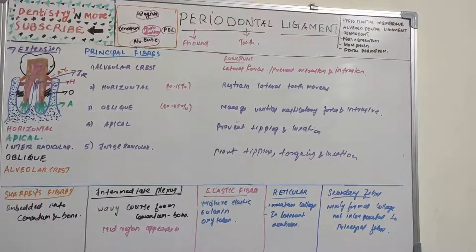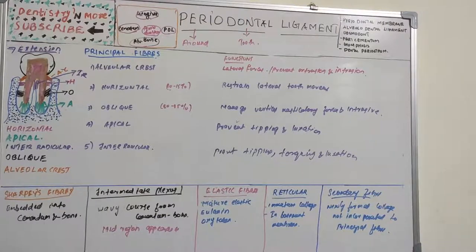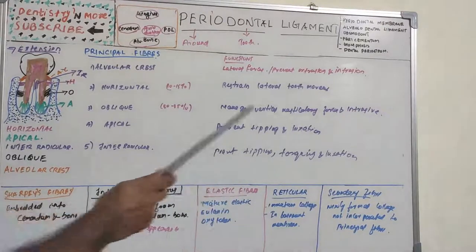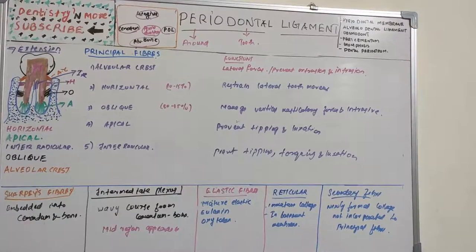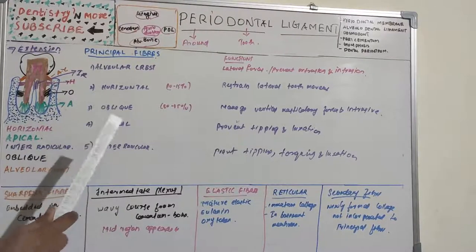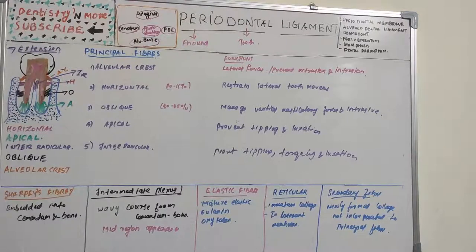The apical group prevents tooth tipping and resists luxation of the tooth from its apical position. The interradicular group helps in resisting tipping, torquing, and luxation movements of the tooth. These are the principal fibers of the periodontal ligament — you need to draw the diagram neatly and explain the origin, insertion, and basic functions of each group.